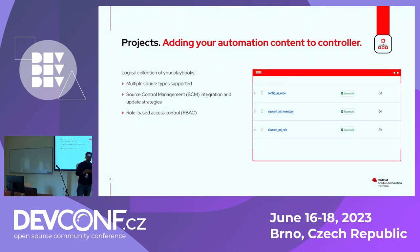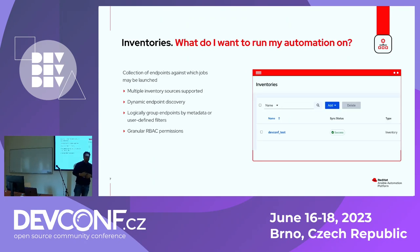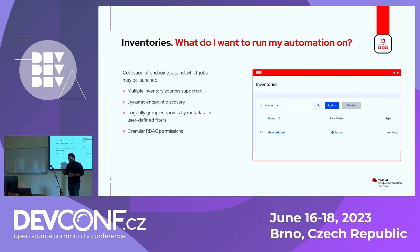There are building blocks you define in the automation controller. Projects — for example, if you have playbooks and roles, you use an SCM extension to import all this code into your automation platform controller. Inventories — these are the actual hosts on which the automation is applied. They are logically grouped, and you can define permissions to control who can access your inventory. For example, my development environment has 50 hosts, my testing environment has 100 hosts, and so on.